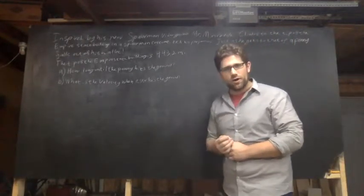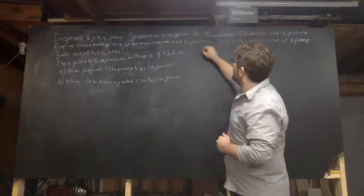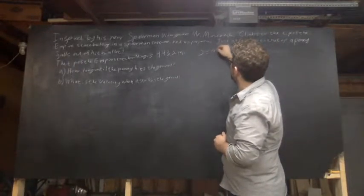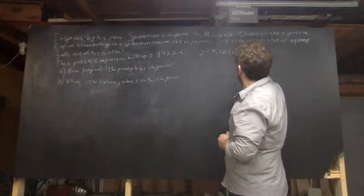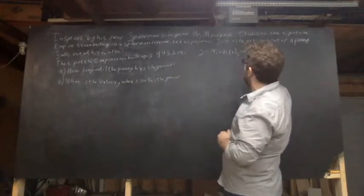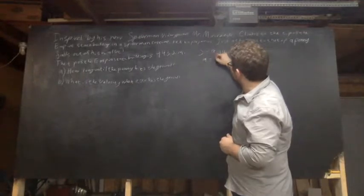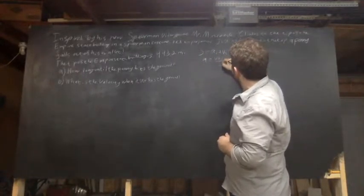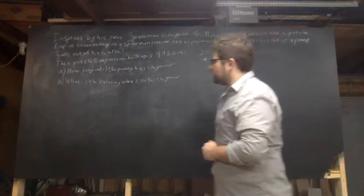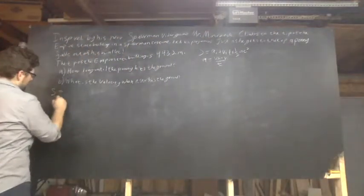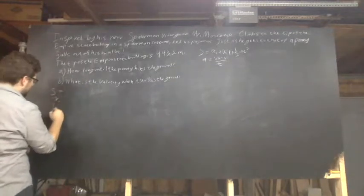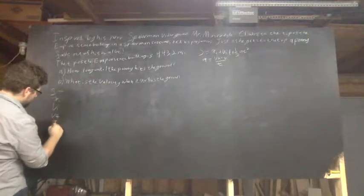So let's go ahead and write out our equations. S equals XI plus VIT plus, say it with me, 1/2 AT squared, and A equals VF minus VI over T. And let's list out our variables: S, XI, VI, VF, A, and T.